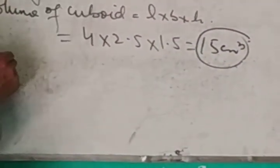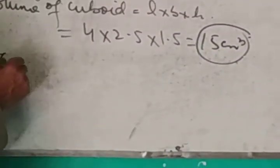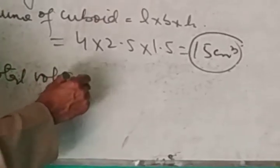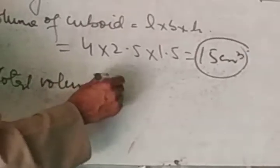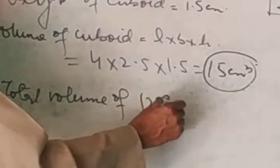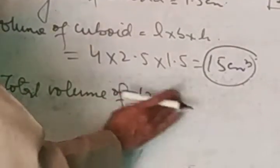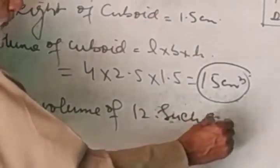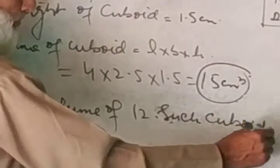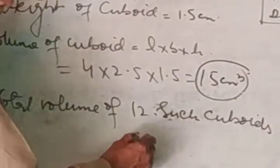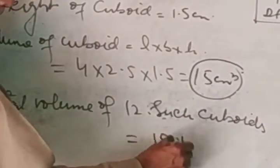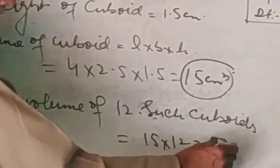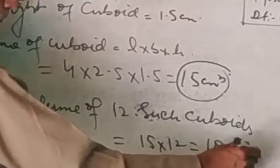Therefore, the total volume of such cuboids is 180 cm cubed. This will be the answer.